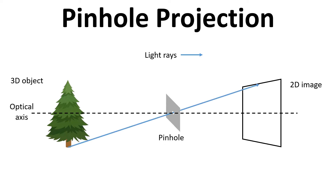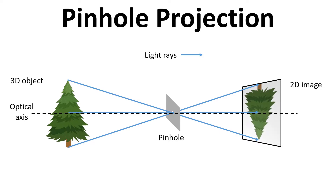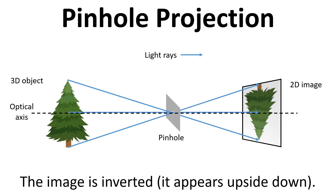A light ray travels from the bottom of the object through the pinhole and then to the top of the image screen. We can also have another light ray that passes from the top of the object — you can see that goes from the top down to the bottom. Finally, we can have one from the centre of the object through the pinhole onto the image screen as well. What we can see is that the object will actually be inverted — it will appear upside down on the screen.